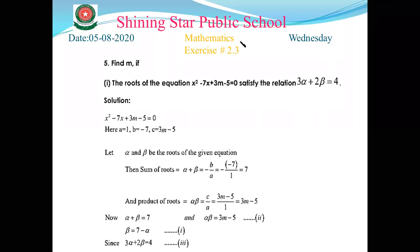In our previous questions, we discussed how to solve problems when the roots are alpha and beta. We also discussed cases where the roots differ by unity or differ by two. Today we discuss how the roots of the equation satisfy a given relation, and how we find the values of the variable in the expression using that relation.